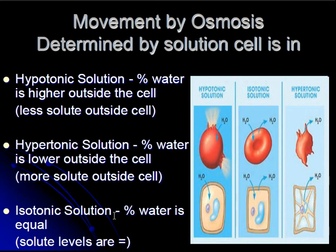Finally, isotonic solutions. This is when the percentage of water and the percentage of solutes are the same inside and outside of the cells. Now there is no net movement of water. However, there is still water moving out of cells, but at the same time there's water moving into the cells. So the net change for the cells is that there is no net change in the amount of water inside of the cell.